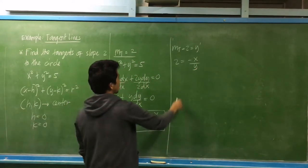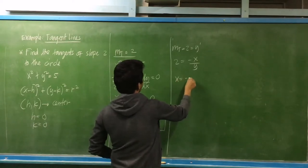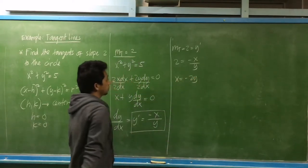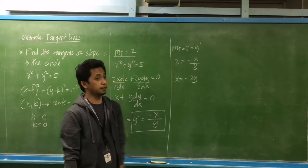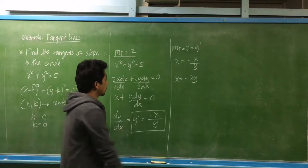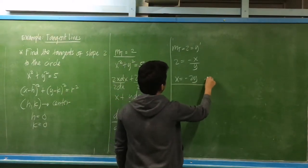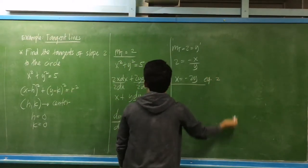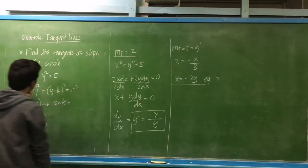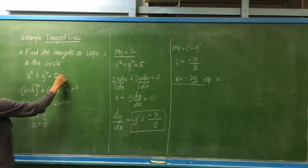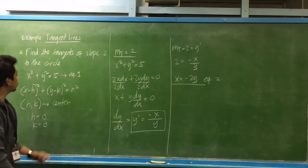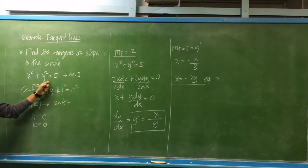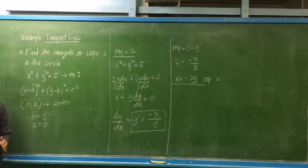We can rearrange: x is equal to negative 2y. This is equation number 2. We may substitute the value of x here to determine the value of y — that is, to determine the point of intersection or point of tangency, where the tangent lines touch the given circle.